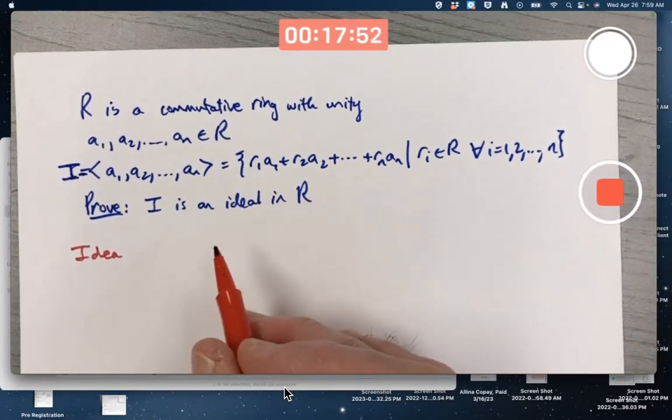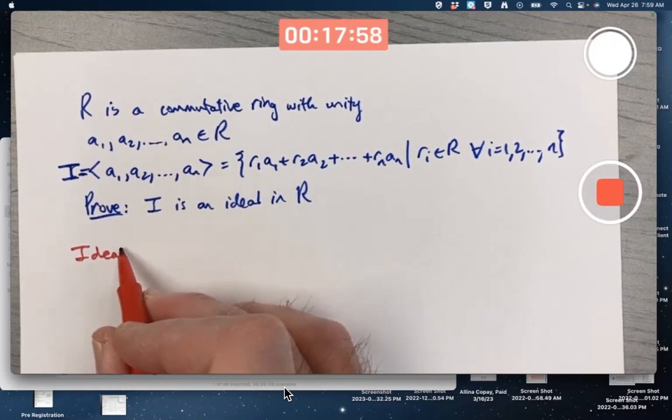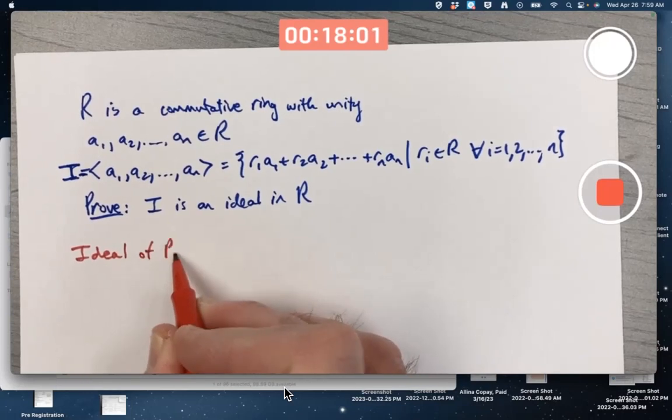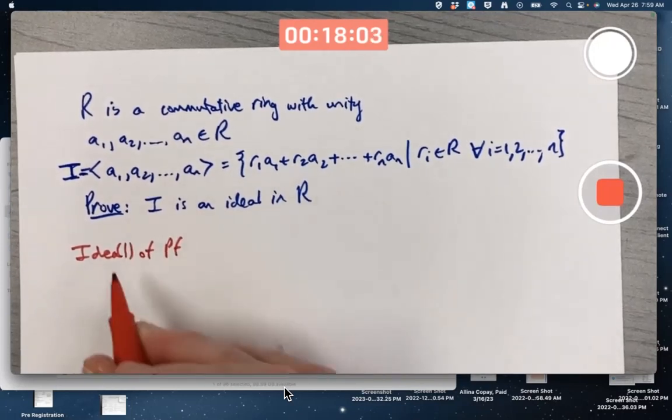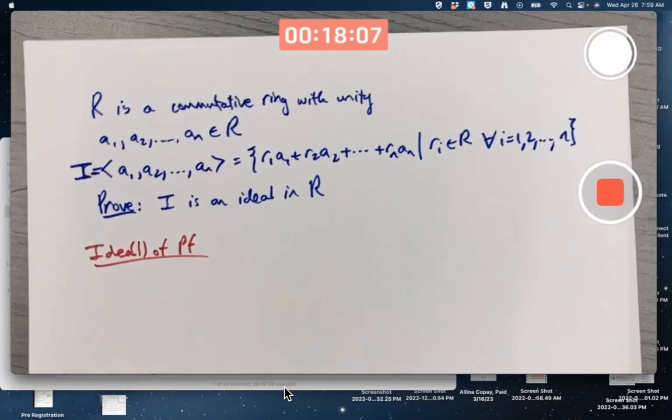Our goal is to prove I is an ideal in R, and I'm not going to do the full proof, but just the idea of the proof, or maybe should I call it the ideal of the proof? Okay, that L is only there for fun. It's the idea of the proof.